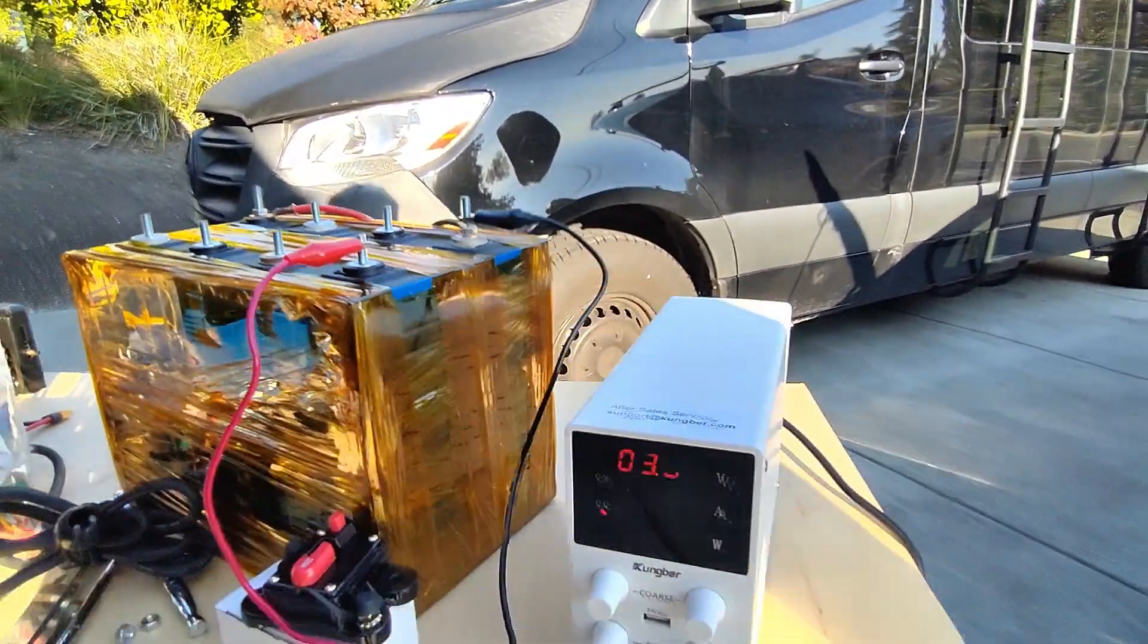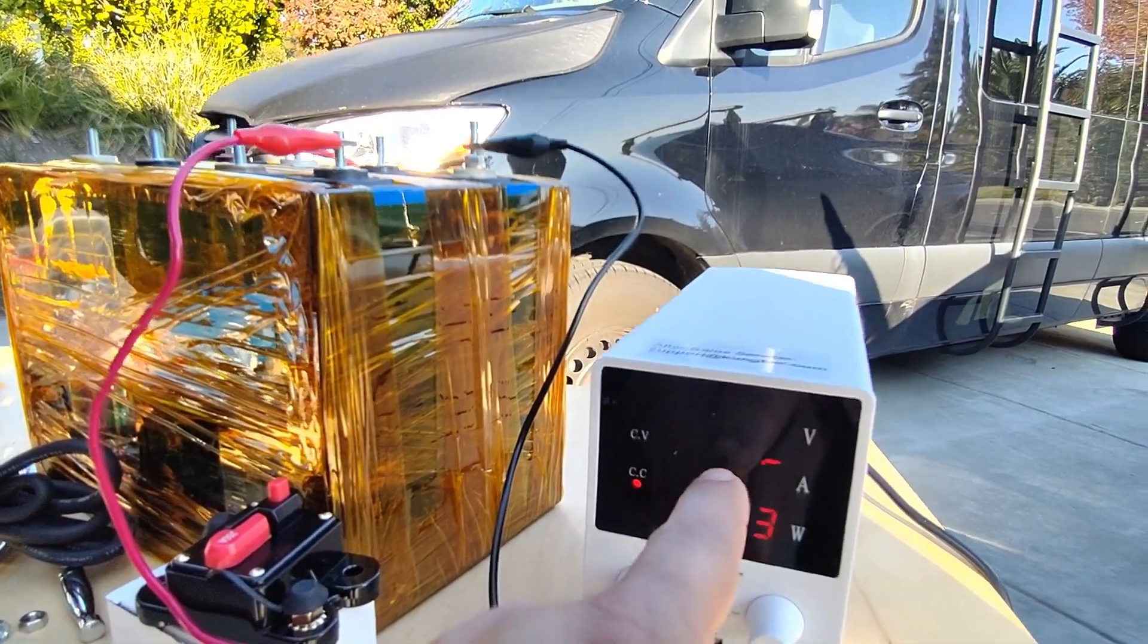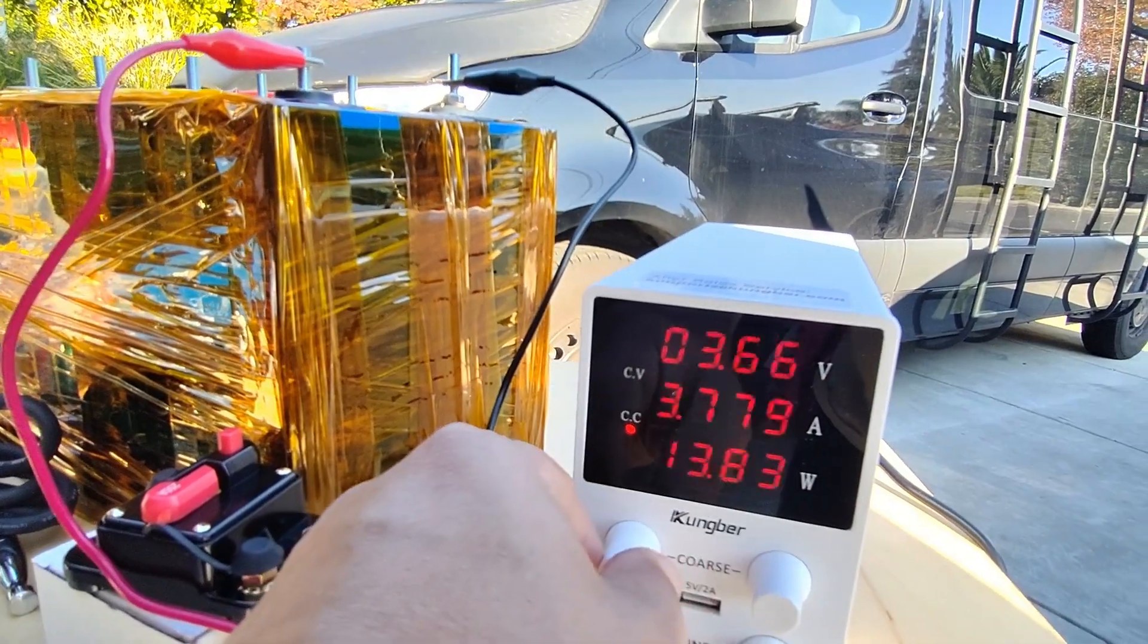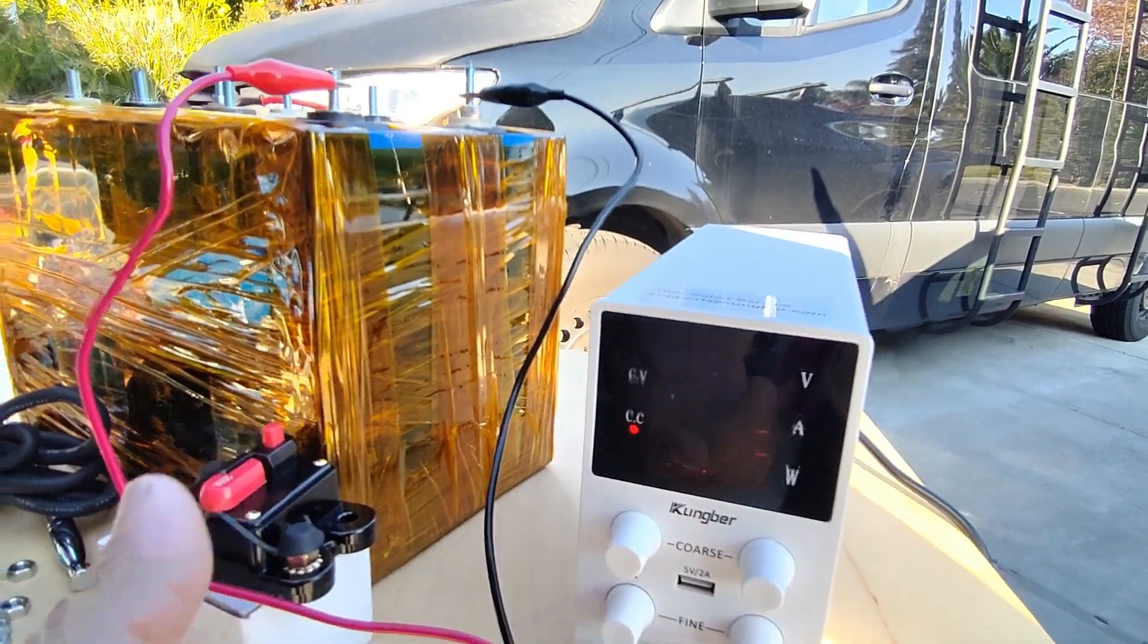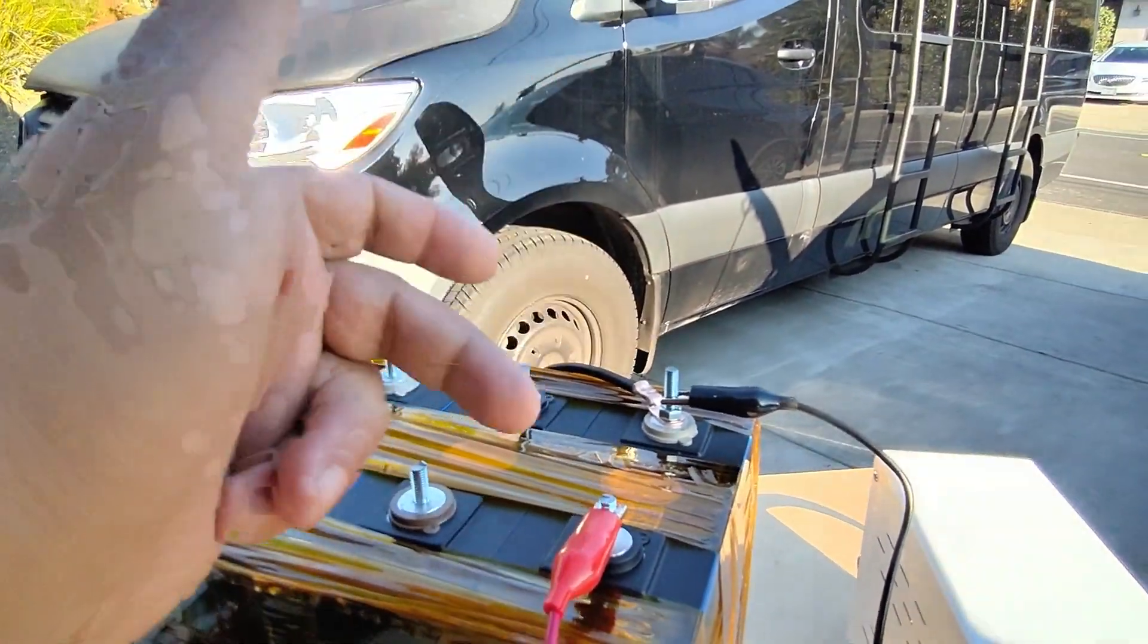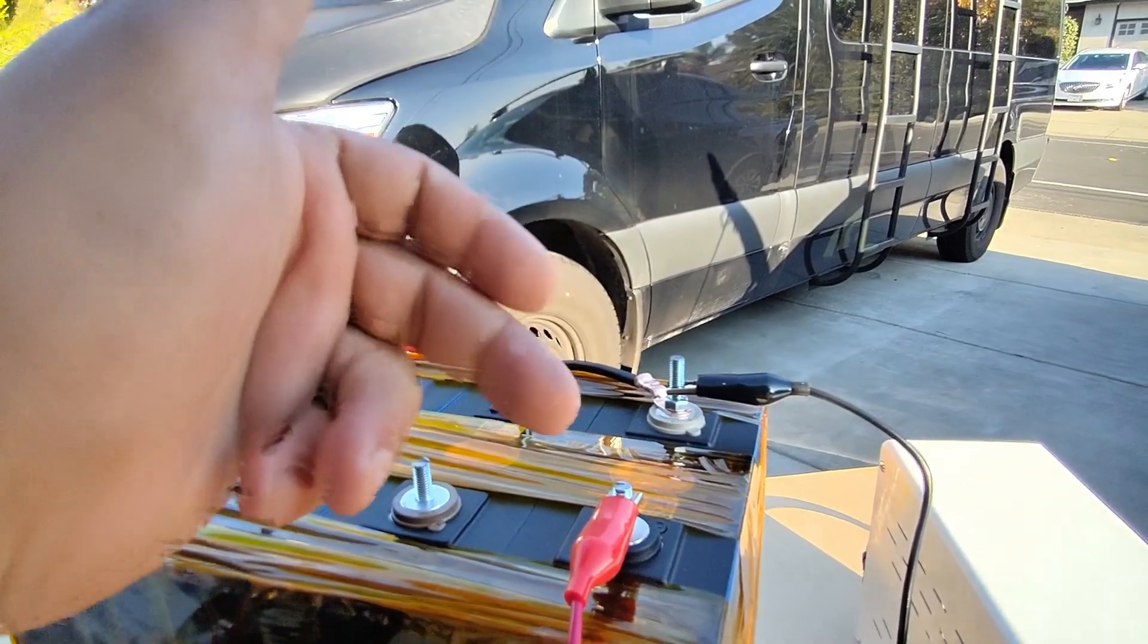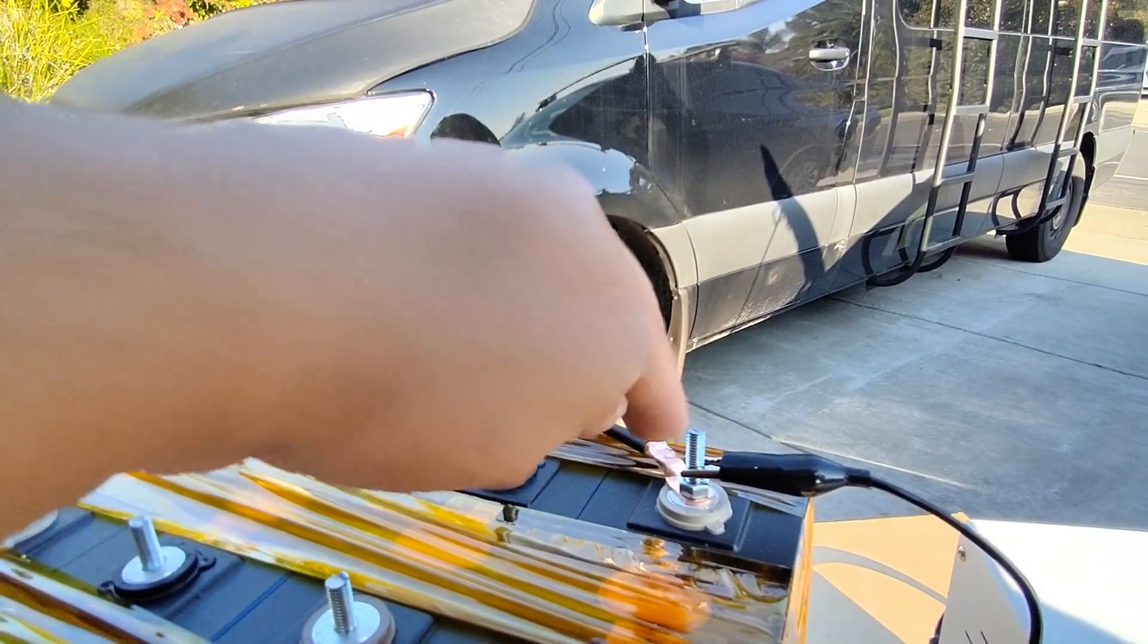So the bus bar is removed, I've hooked up my power supply here and I got it cranked to 3.65 and basically everything is charging. Remember when you're working on these EVE cells here that the black is going to be your positive and this is going to be your negative.